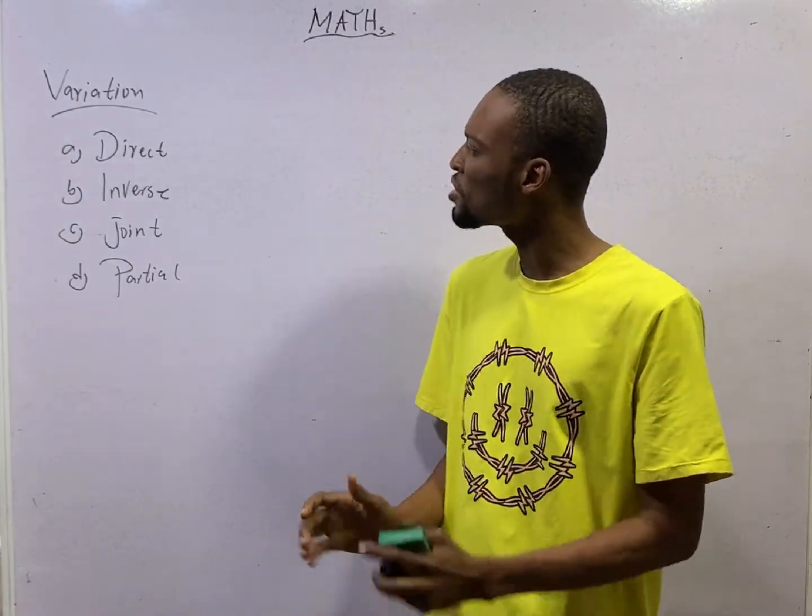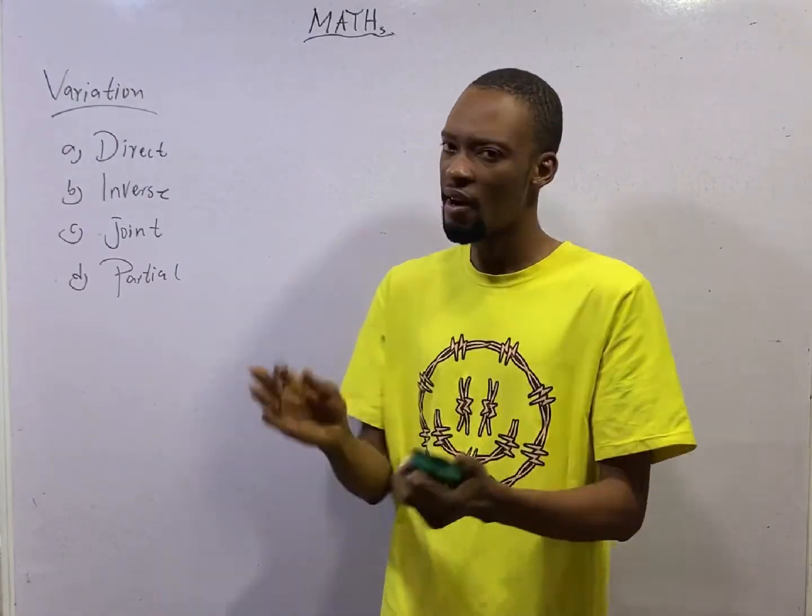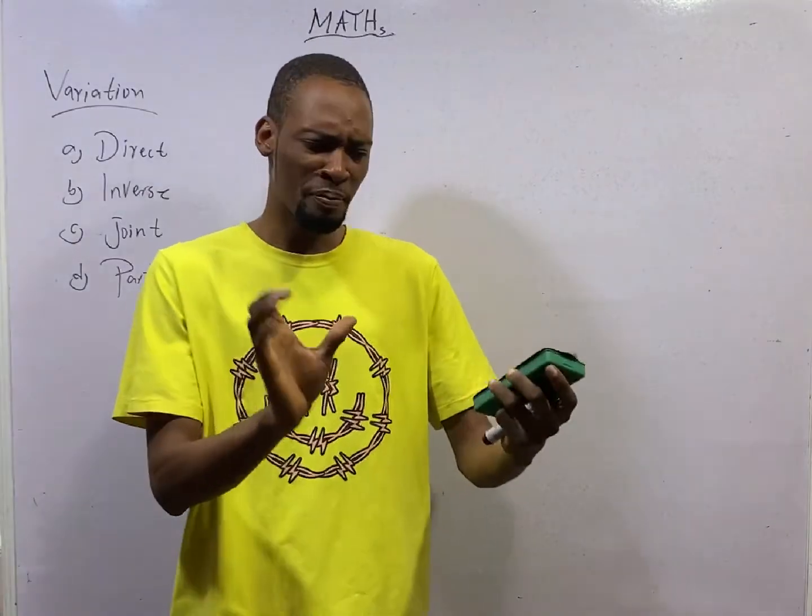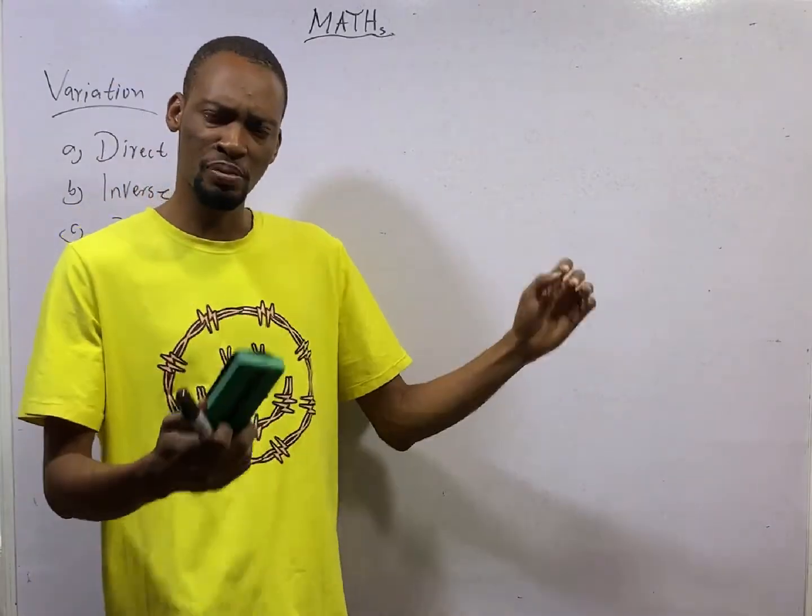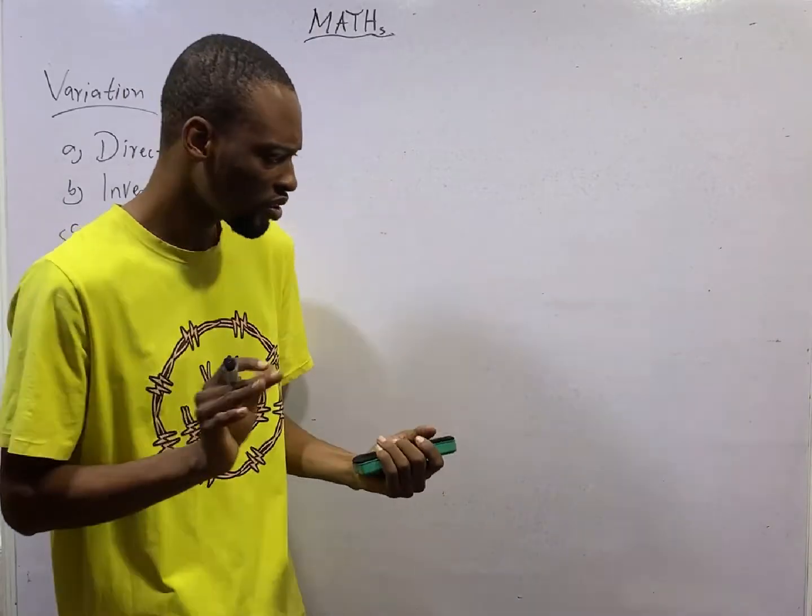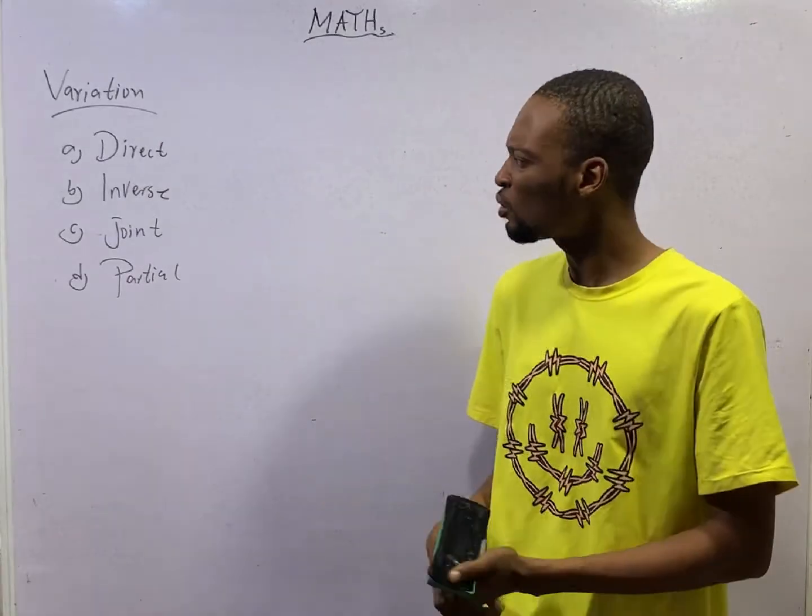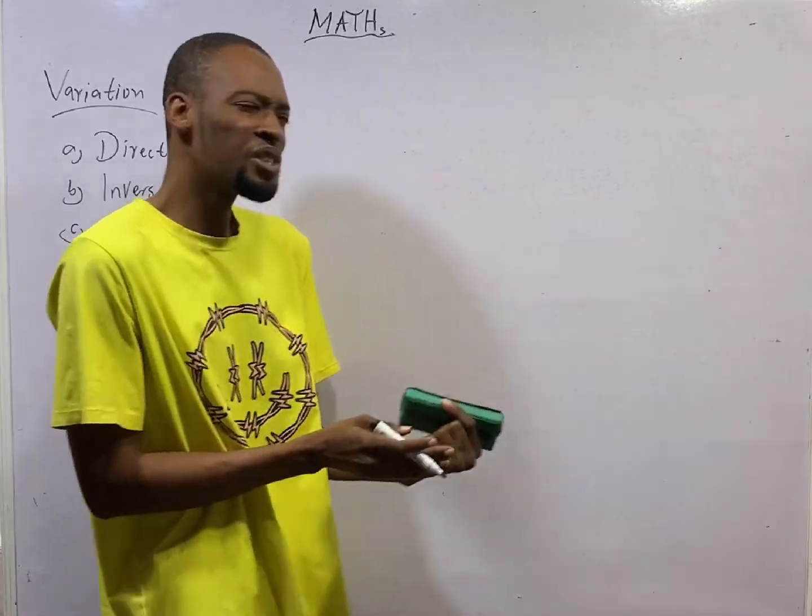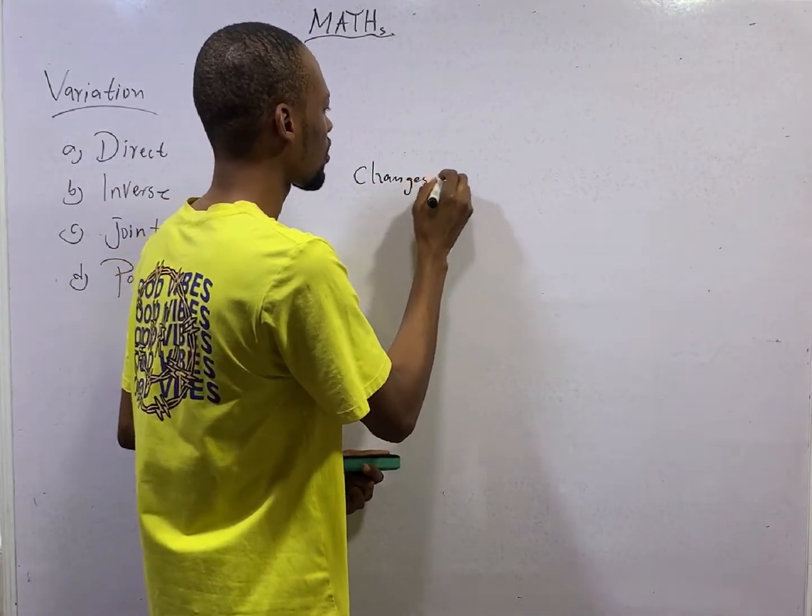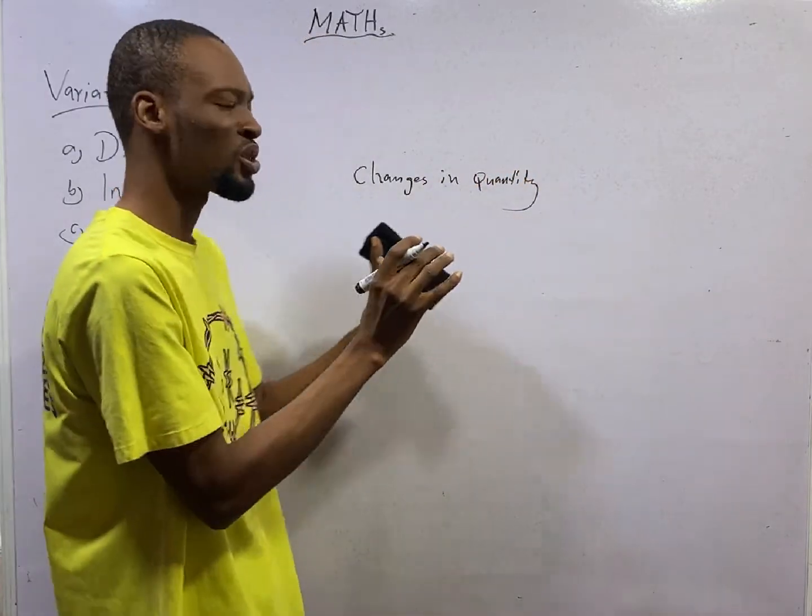In this episode, I Flash Isaac shall be introducing variation. Variation is the branch of mathematics that studies the relationship between quantities, how quantities depend on each other. Don't confuse variation with calculus. Calculus is a branch of mathematics that studies the relationship between changes in quantity.